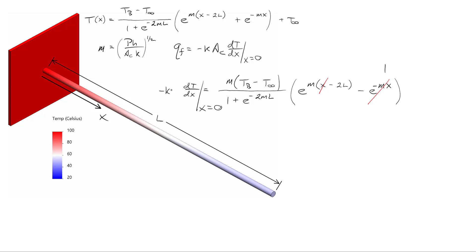So I'm going to take both sides, multiply by negative k times the cross-sectional area, which gives us an expression for QF, the rate at which the fin is pulling heat from the base. So it cleaned up a bit, here's an expression for QF.